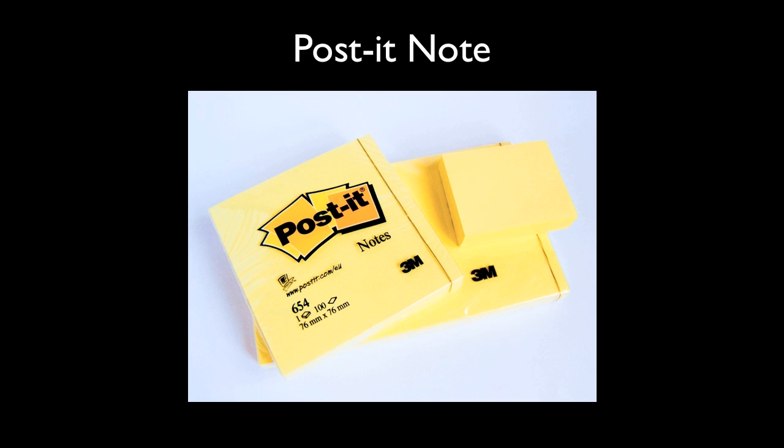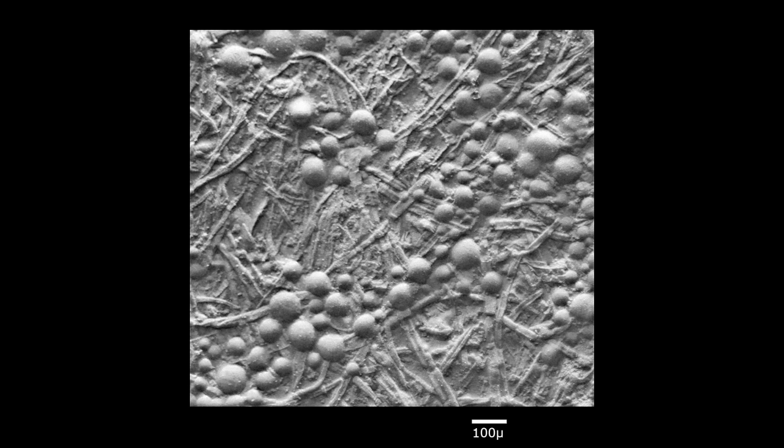On the sticky side of a post-it note, you can see the paper fibers and the droplets of glue. The droplets are approximately 100 microns in diameter, about the size of a grain of salt.